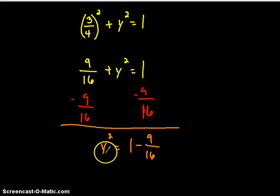And when you do that, you should wind up having y squared equals one minus 9 over 16. You can plug this in the calculator or just know how to add fractions. I'll multiply this one by 16 over 16 so I can make it the same denominator, which is 16, and then subtract.